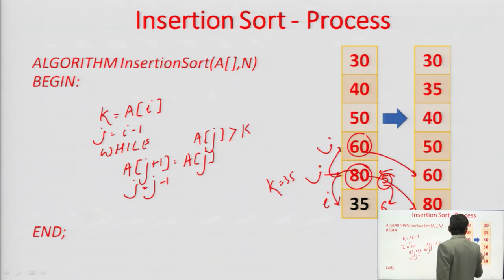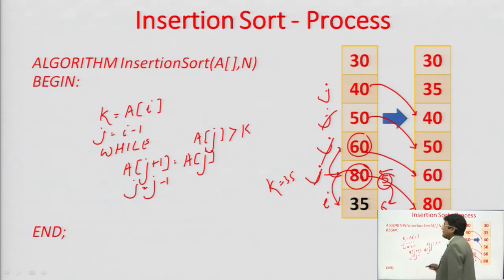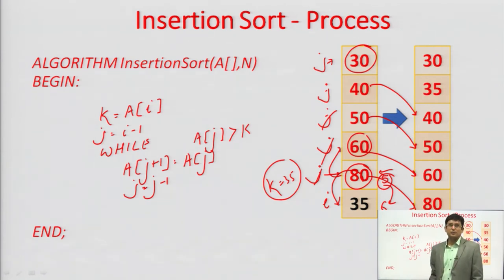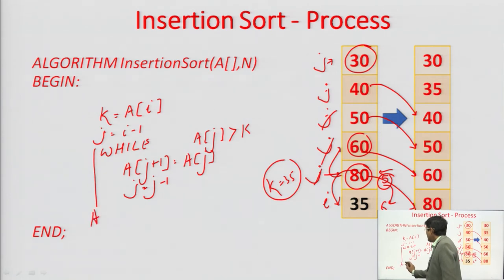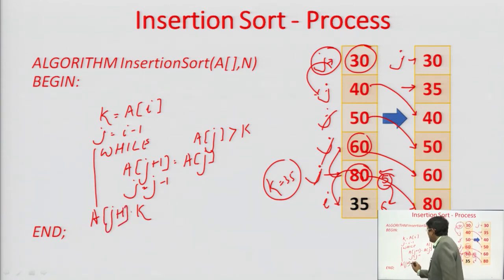Continuing the example: 80 has come here, 60 has come here, and j is decremented by 1 each time. When j points to element 30, which is not larger than k = 35, the loop condition fails and the loop terminates. After termination, we insert k at index j+1, not j. So a[j+1] = k, placing 35 at the correct position.